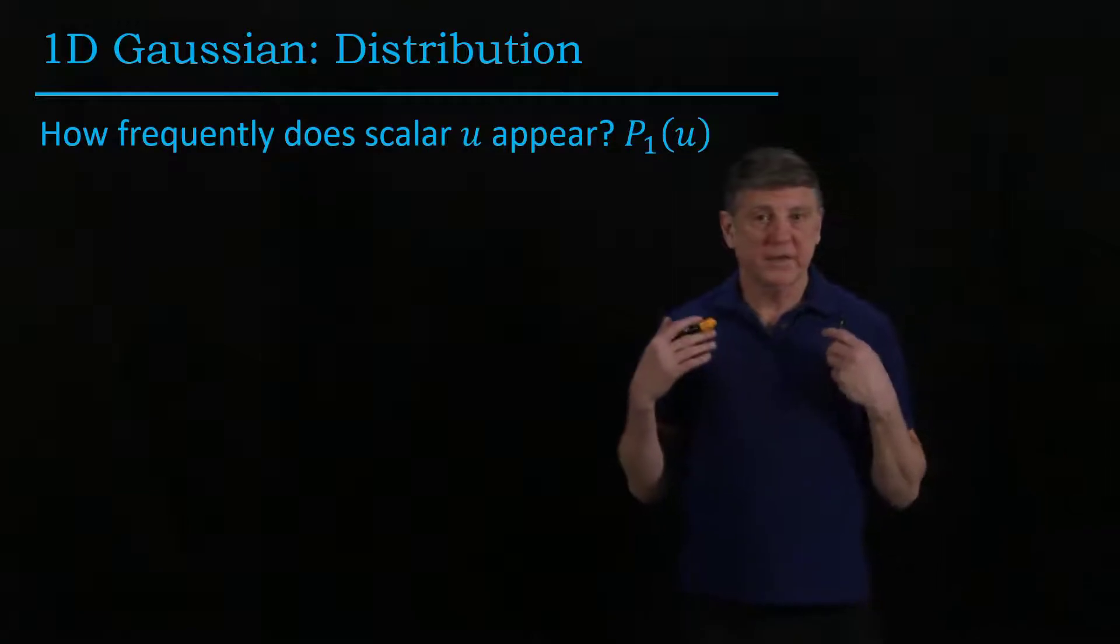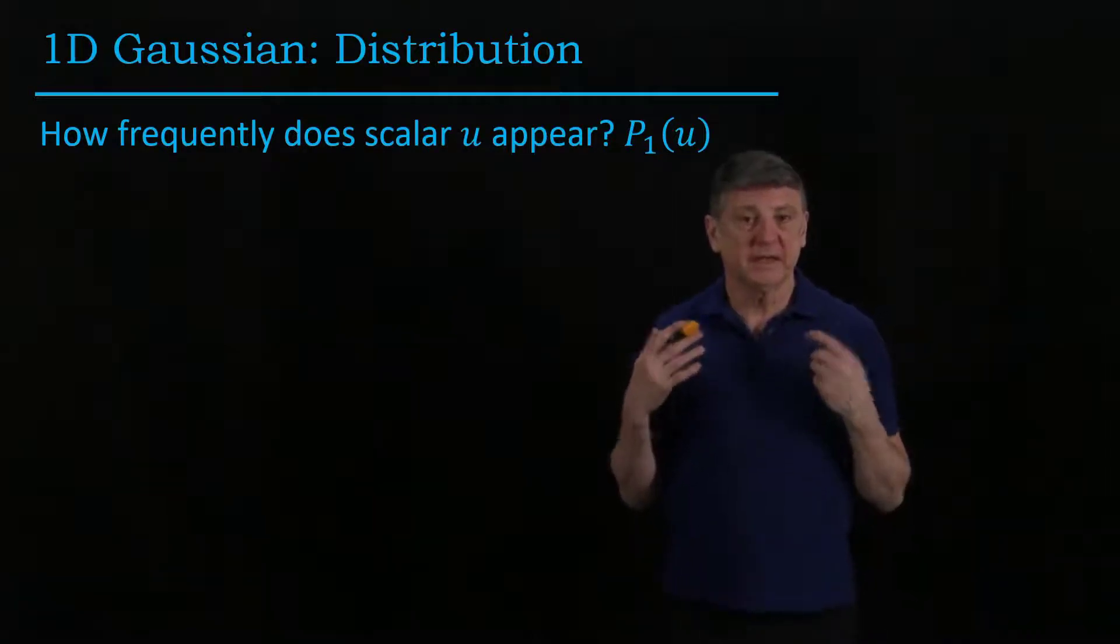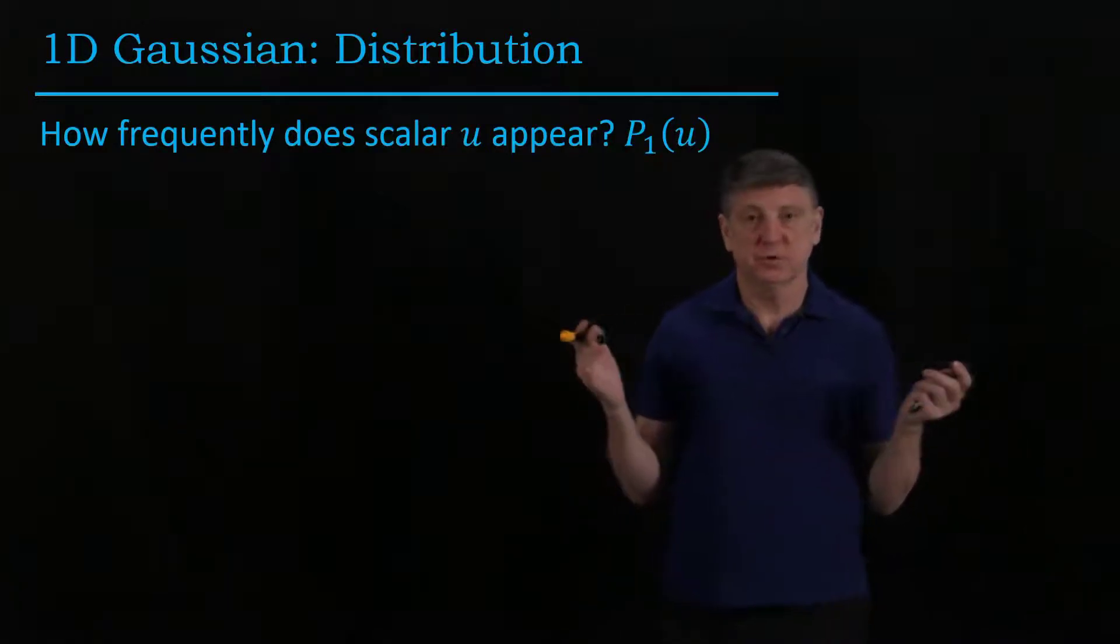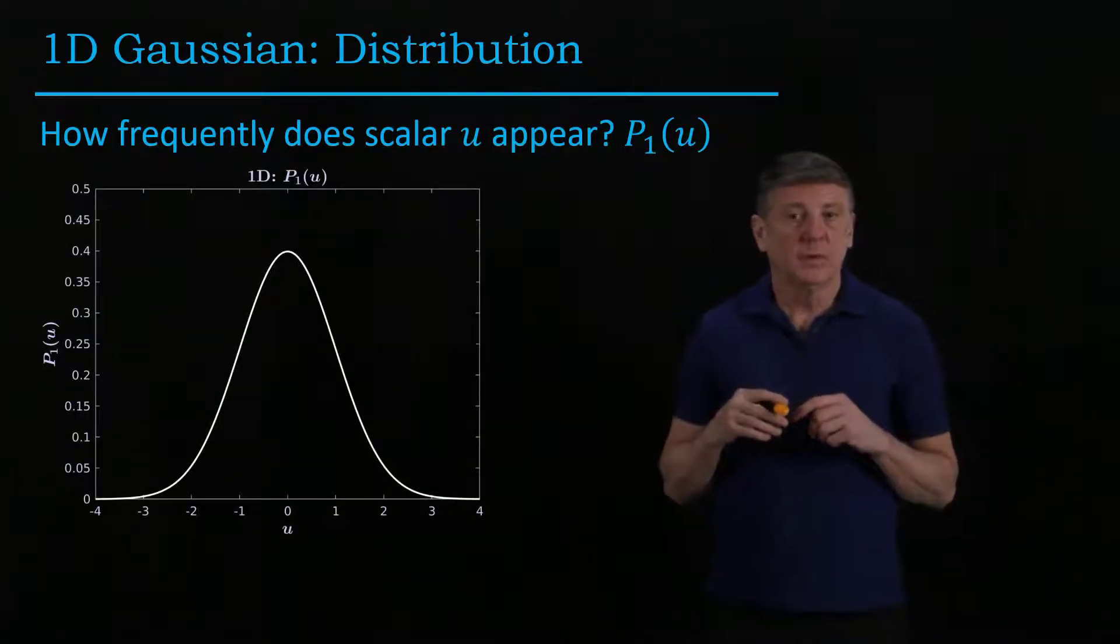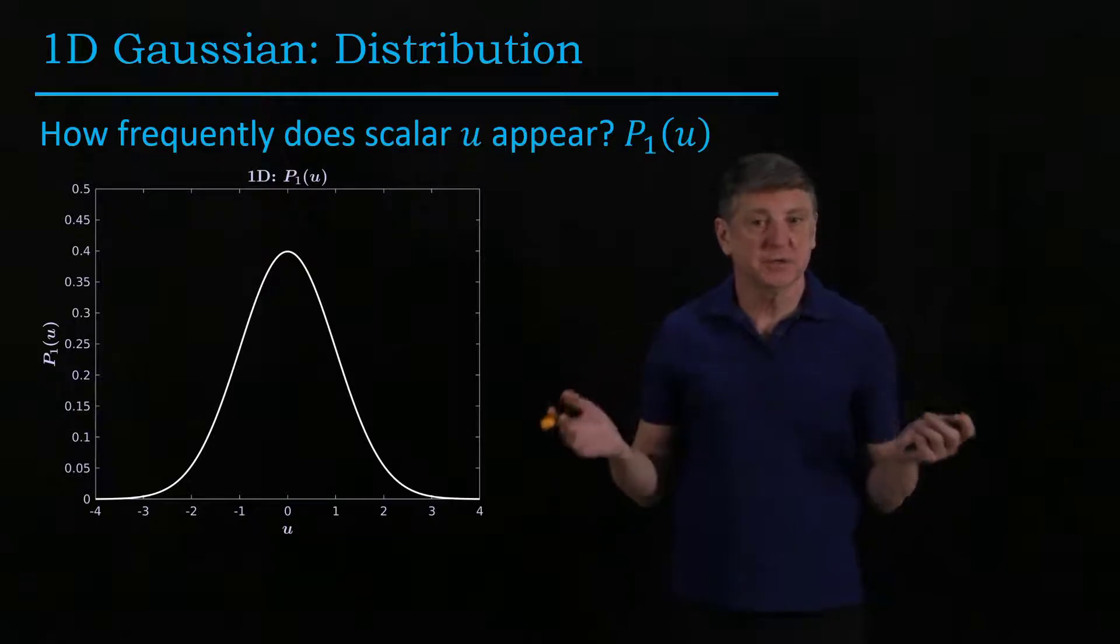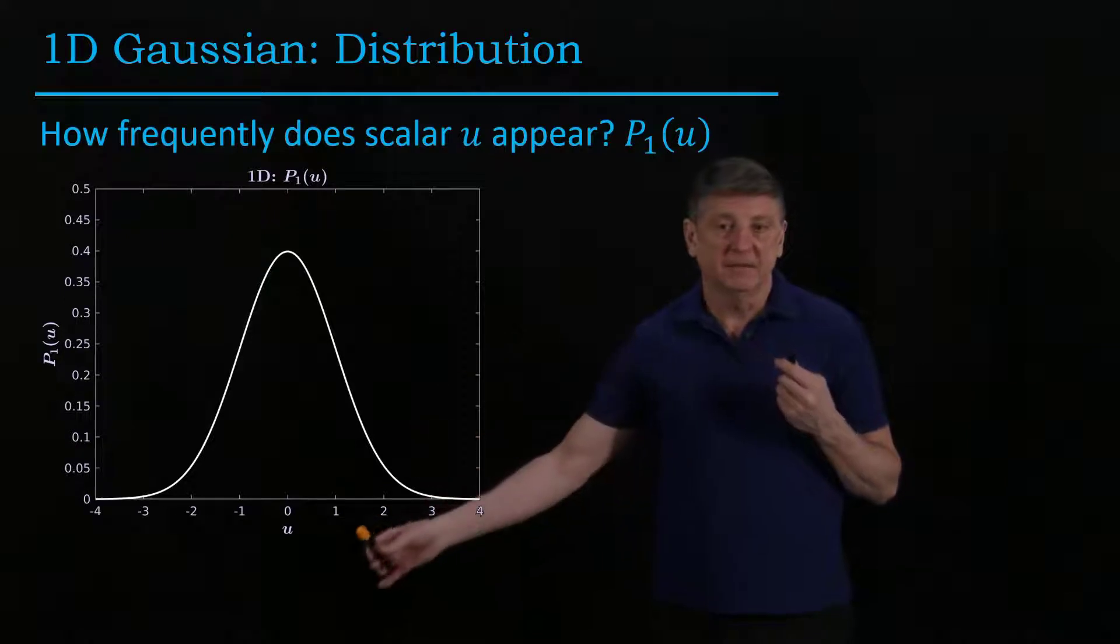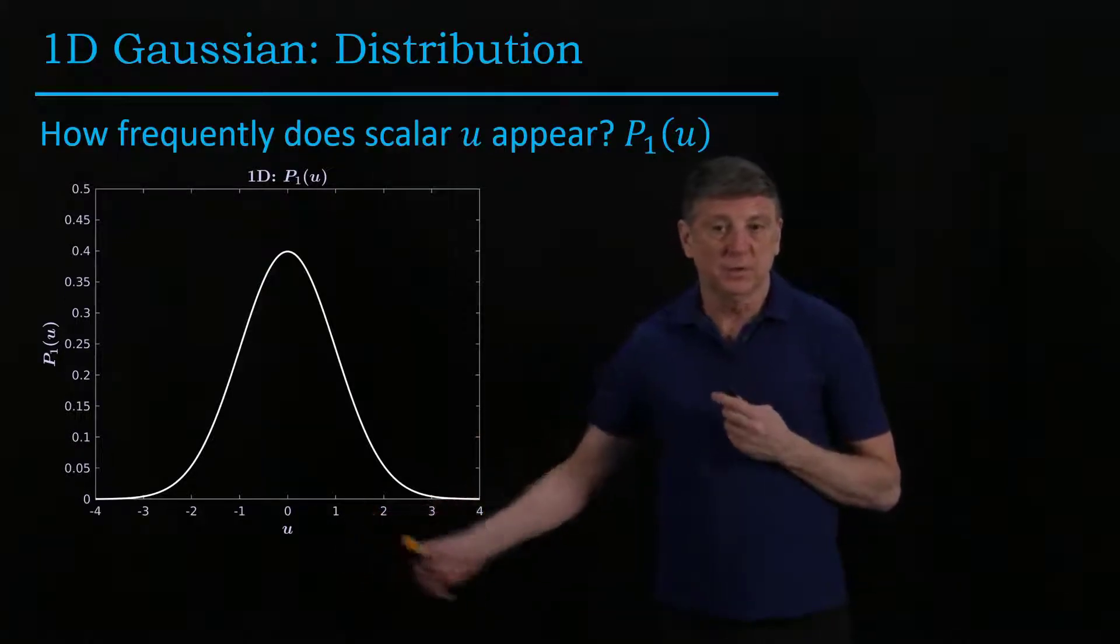So now we can ask how frequently in one dimension does a scalar value u appear. So u is our unknown, and what we get is the traditional Gaussian or bell curve. So this represents the probability that a value u will appear.